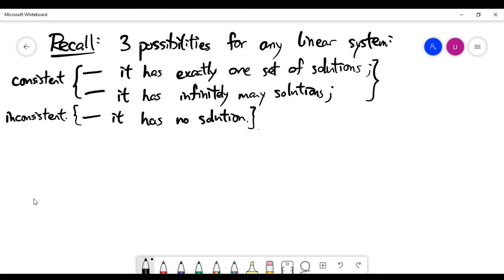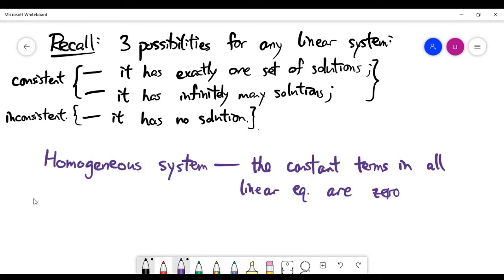Now we'll introduce a special type of system called the homogeneous system. To put it simply, any homogeneous system of linear equations means that the constant term in all the linear equations are zeros.